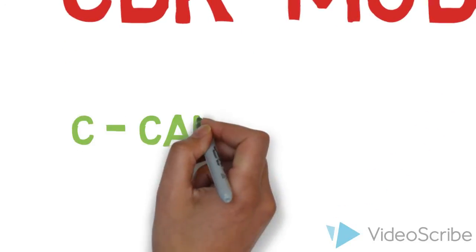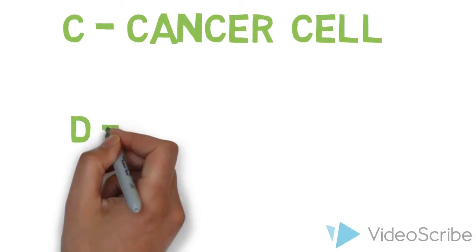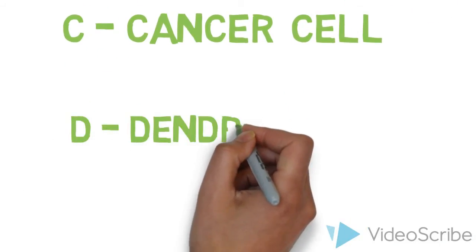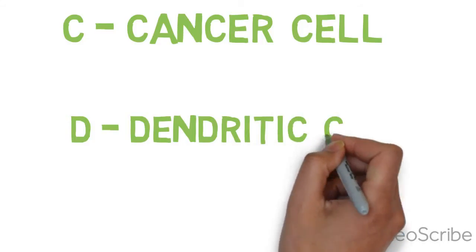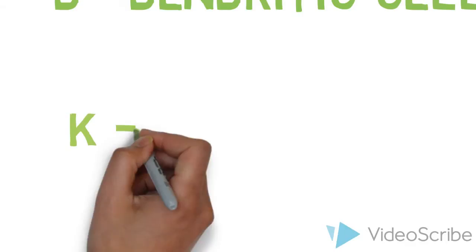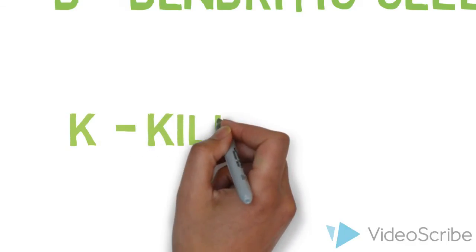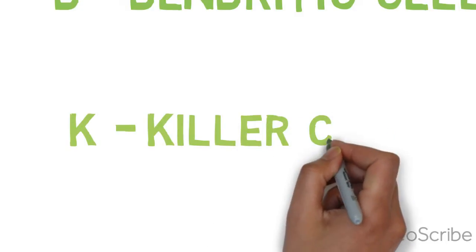Basically in the CDK model, C represents the cancer cells interacting with the immune system. D for the mature tumor based antigens. And the killer cells can be taken as the component of the cytotoxic cell, helper T cells and effector B cells.